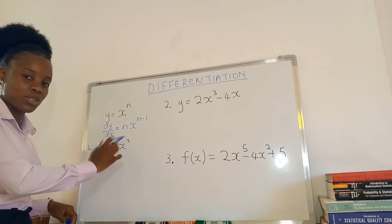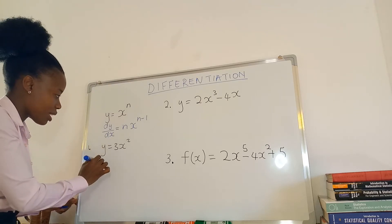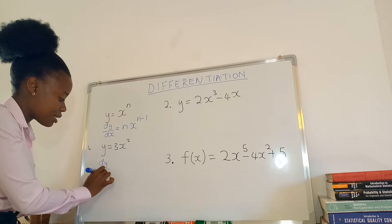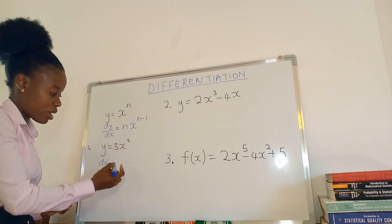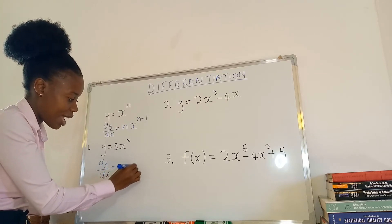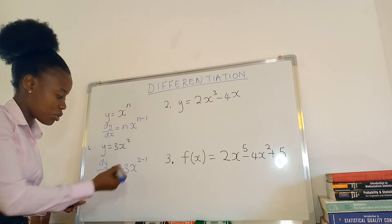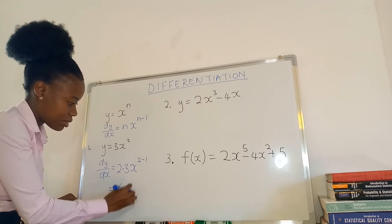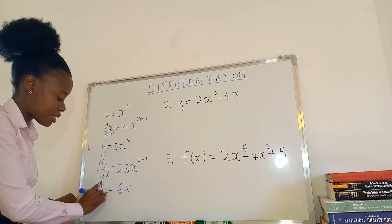Number one: y equals 3x squared. We write dy over dx, drop the power, so we get two times 3x to the power two minus one, which gives us 6x. So dy over dx equals 6x.